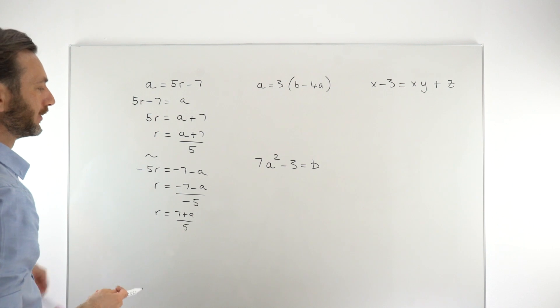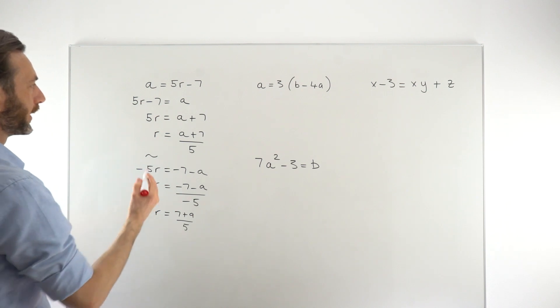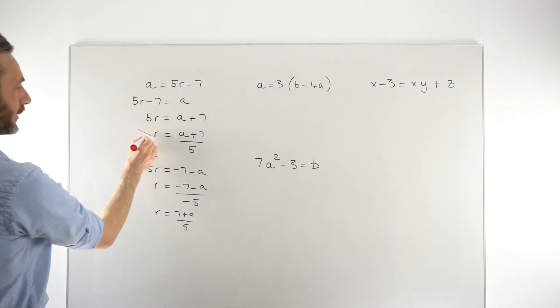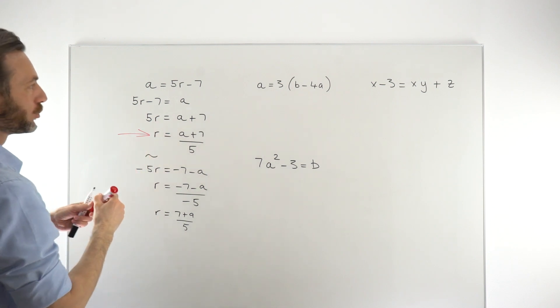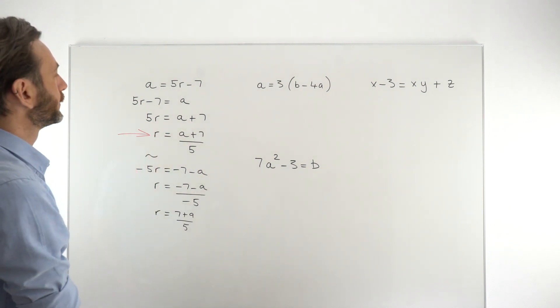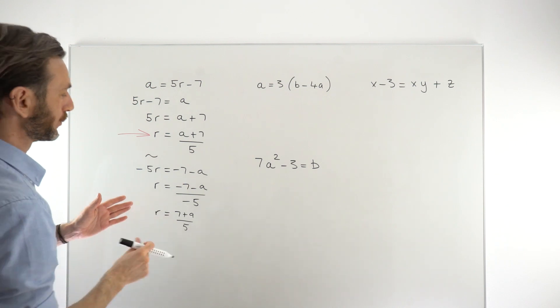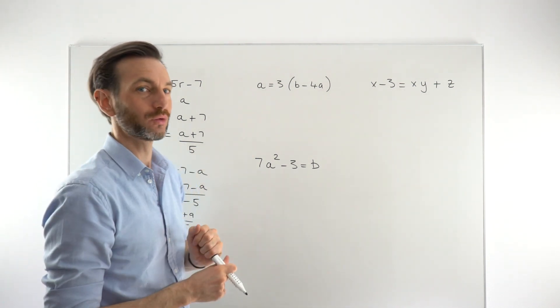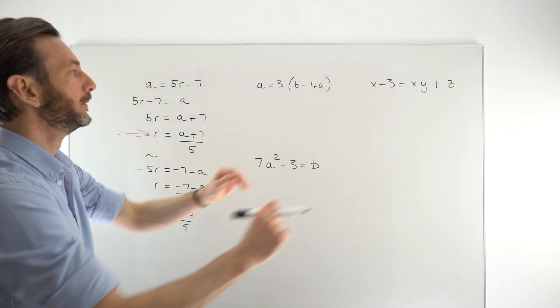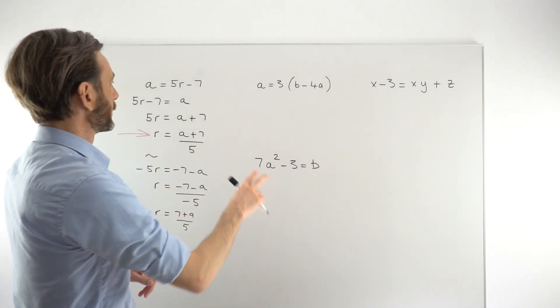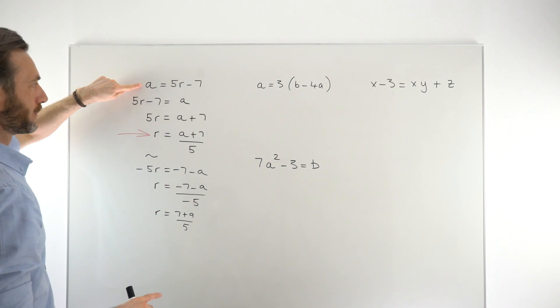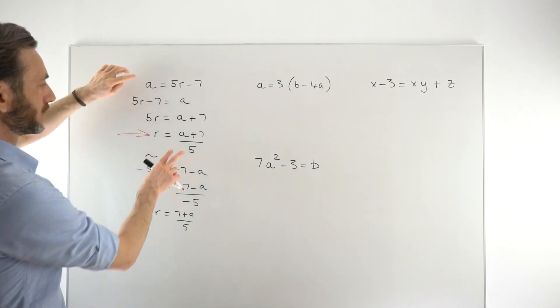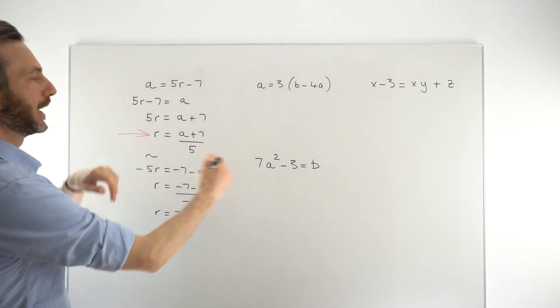I would recommend though going with this method here. I think this one's more effective. You're not always going to have the option to flip your equation around. You might have some where you've got to kind of go down this route. Again, it's just gaining enough experience of these question types to know what to do in every scenario. Okay, so we changed the subject of the formula there from A to R. These are the same formula, just written backwards.